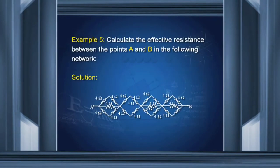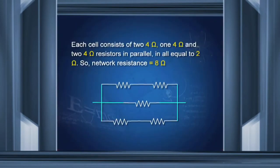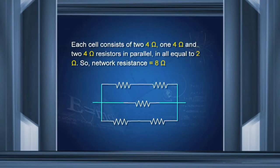Another very complicated-looking network, but it is not really complicated. Each cell of this network is actually two resistances in series — two here in series — and then they are in parallel with this. So this series is in parallel with this, and this series is in parallel with this. We can find out: this is 4 plus 4 equals 8, this is also 4 plus 4 equals 8, and this is 4. So 1/8 plus 1/8 plus 1/4 adds up to only 2 ohms. So each of these cells has resistance 2 ohms and there are 4 such cells. Therefore, the total resistance between A and B is 8 ohms.